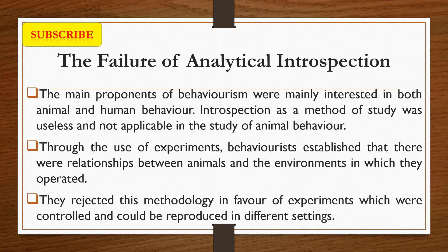The main proponents of behaviorism were mainly interested in both animal and human behavior. Introspection as a method of study was seen to be useless and not applicable in the study of animal behavior. Through the use of experiments, behaviorists established that there were relationships between animals and the environment in which they operated. They rejected introspection in favor of controlled experiments that could be reproduced in different settings.